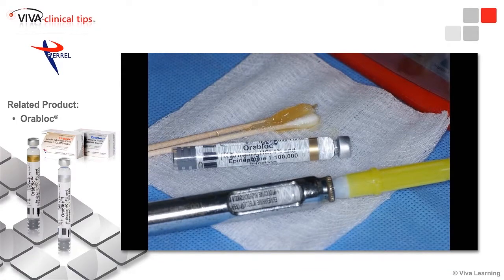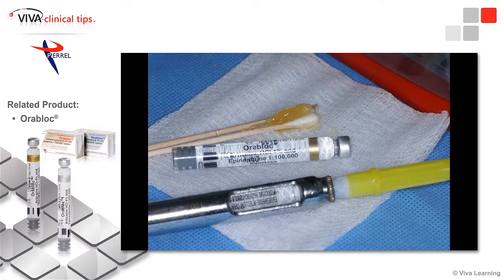Here's my armamentarium for dealing with this young child. I'll use topical anesthetic — most of these are benzocaine formulations — and our local anesthetic agent. For mandibular procedures, this is a 27-gauge needle, which works fine. The 25-gauge can certainly be used as well to reduce the amount of pain on injection.